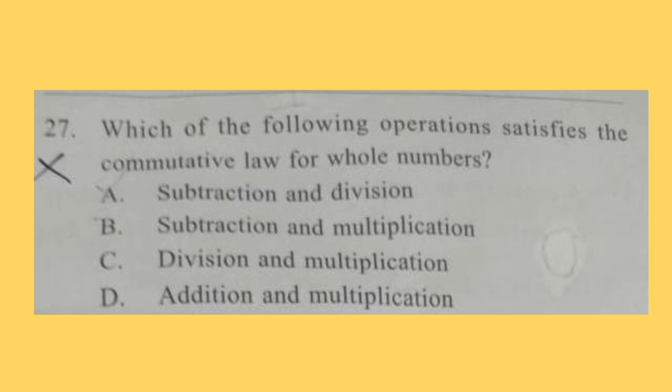Question 27: Which of the following operations satisfy the commutative law for whole numbers? Correct answer is option D, addition and multiplication.